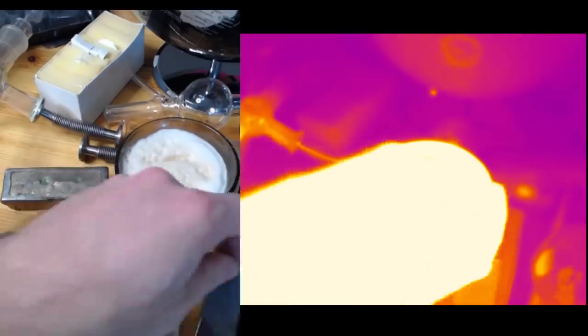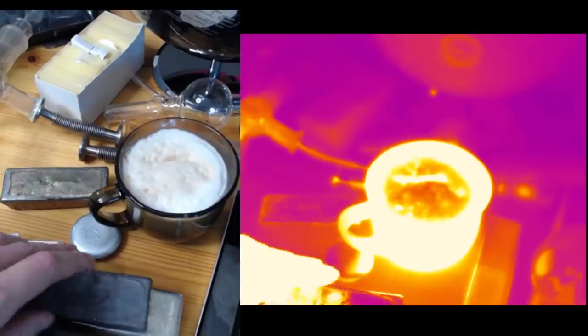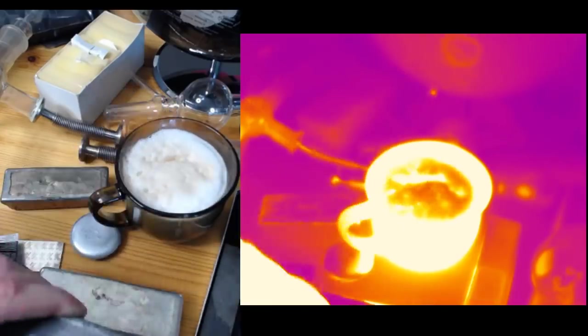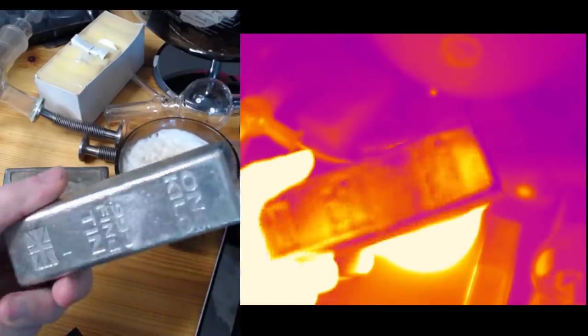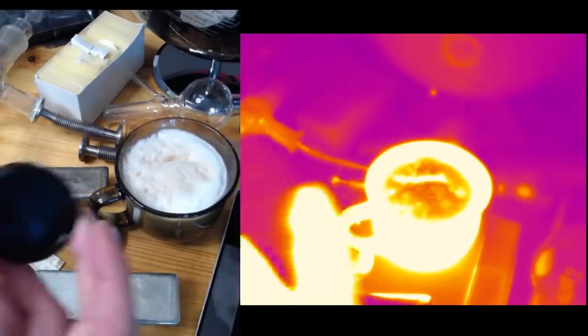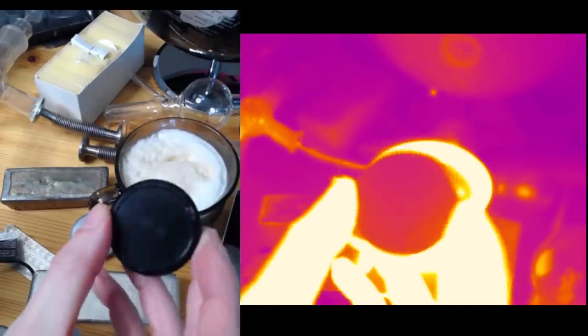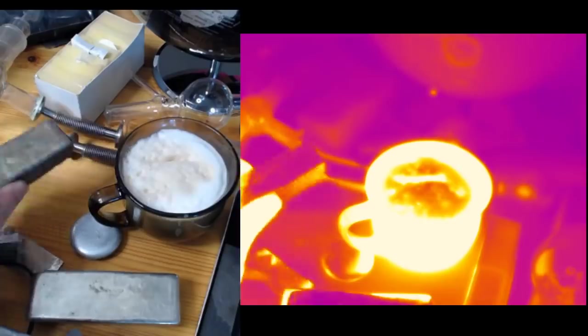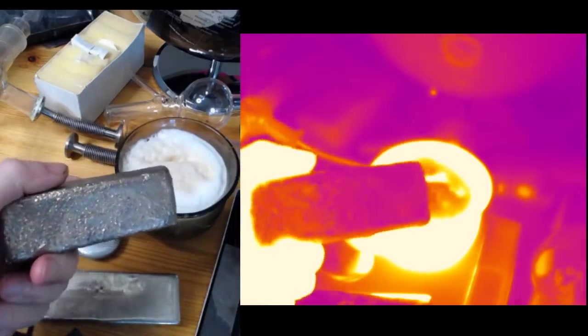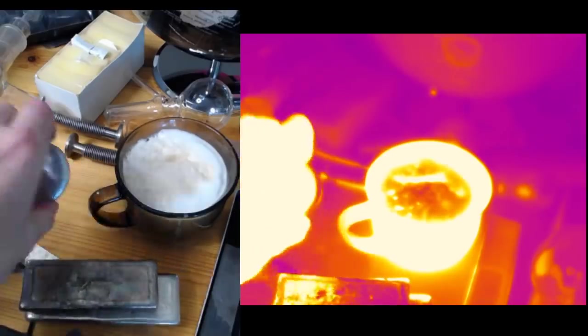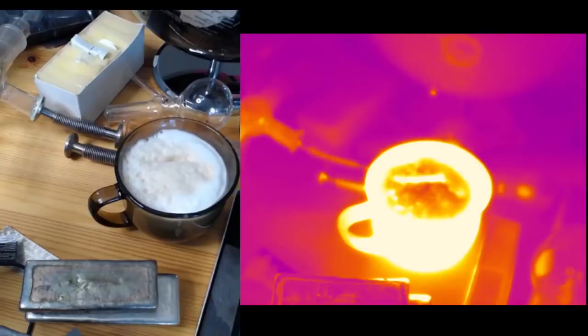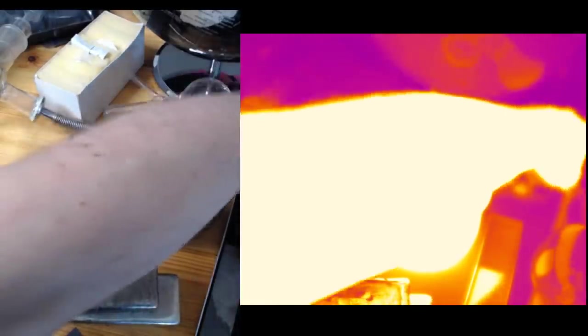We've got some lead which is pretty dull in the visible but fairly shiny in the infrared. Tin is also very reflective in the infrared. This is painted black - that works okay for not being shiny anyway. This is bismuth, sort of fairly non-metallic type metal, and again not much difference there. And finally some zinc, again super reflective.